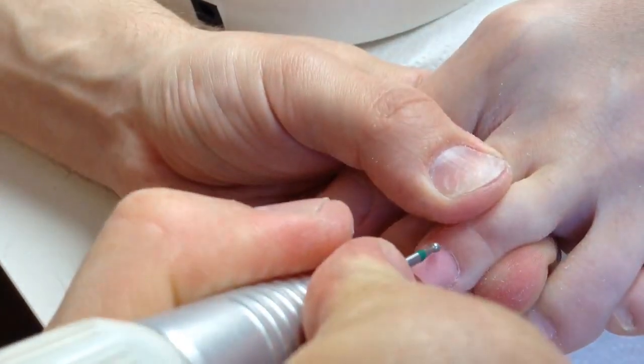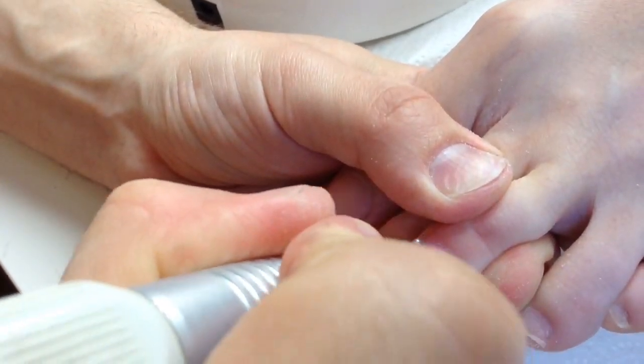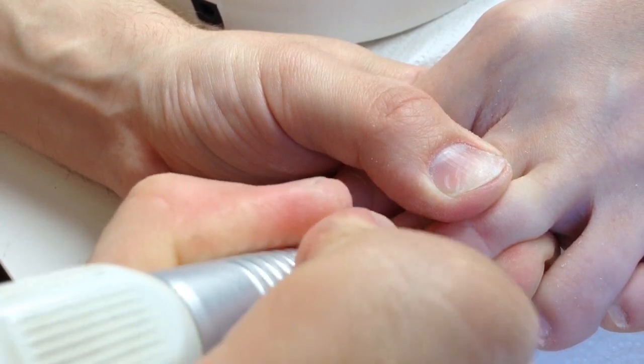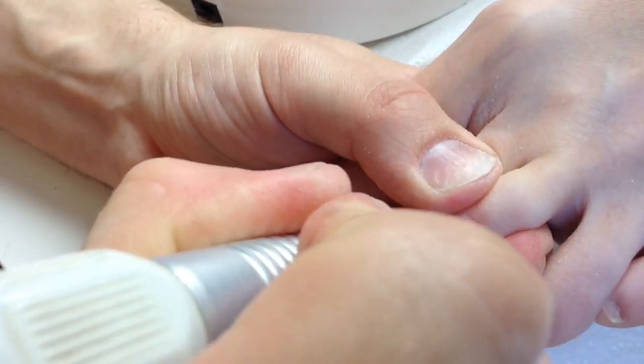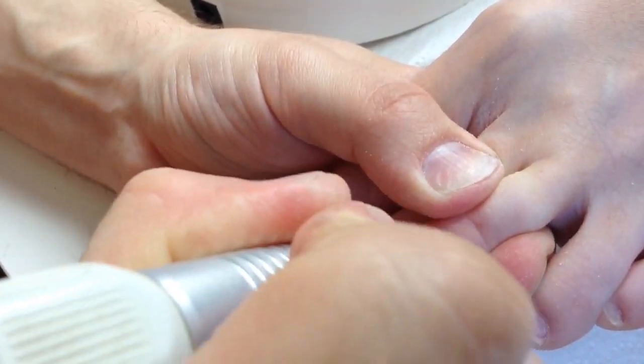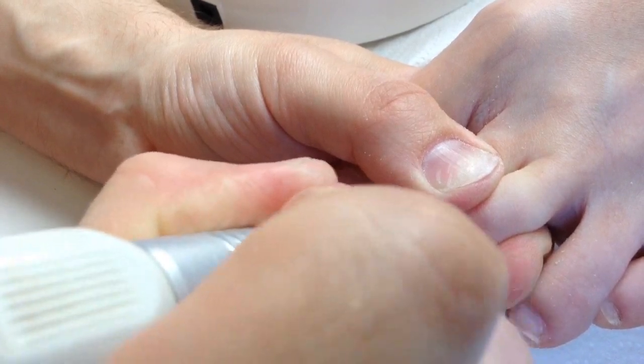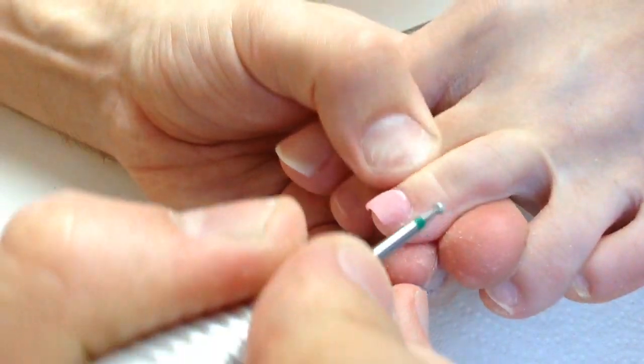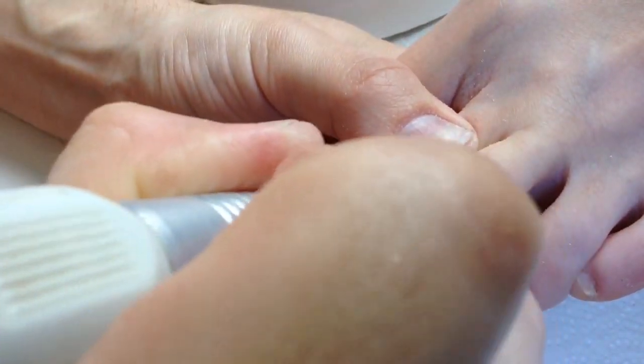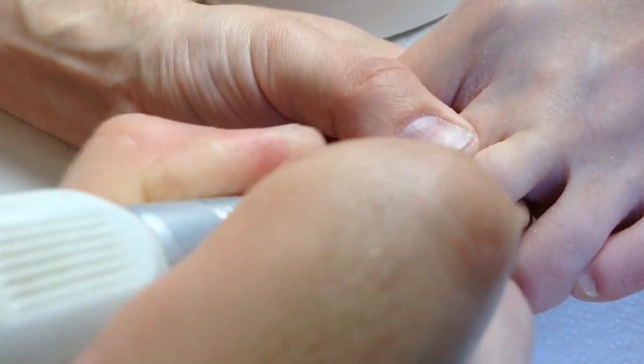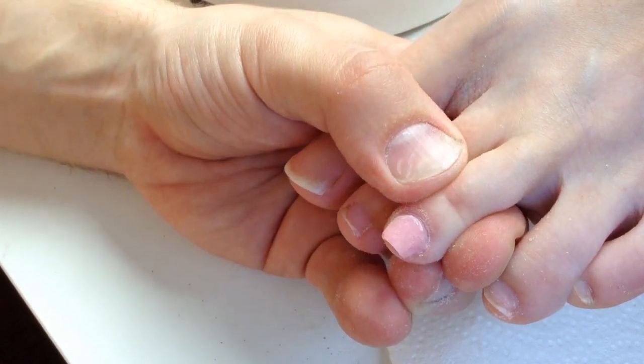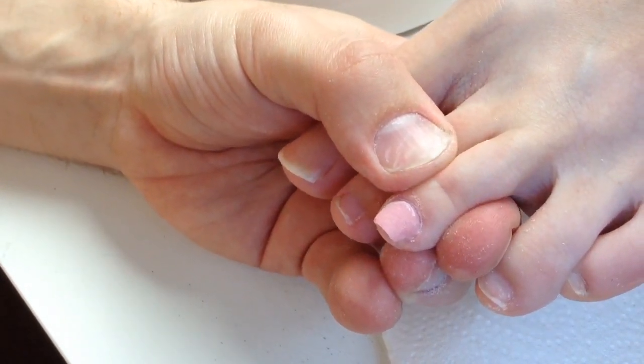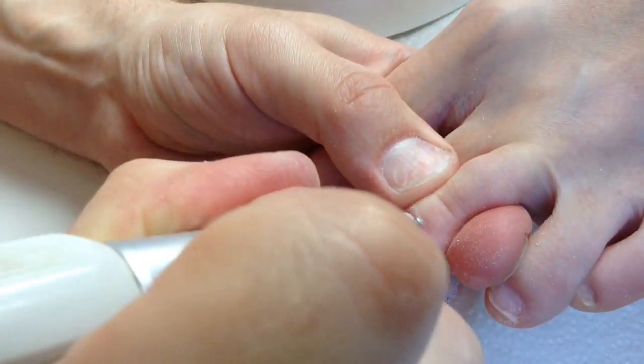As you can see we have sculpted the nail on the middle finger of the toenail. Now I'm working with the thumb. Beginners are trying to work with the wet skin on the first phases of the manicure. This is a mistake.